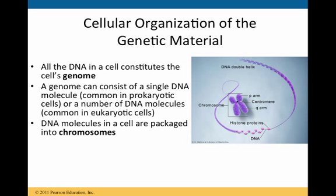These chromatids are initially attached by adhesive proteins, and what you see here is the centromere. We have chromatids and a centromere, and this entire structure is a chromosome. All the DNA in a cell constitutes the genome. A genome can consist of a single DNA molecule — that's in prokaryotic cells — or a number of DNA molecules, commonly found in eukaryotic cells. DNA molecules in a cell are packaged into chromosomes. This diagram illustrates the DNA double helix and how chromosomes are composed of this DNA.